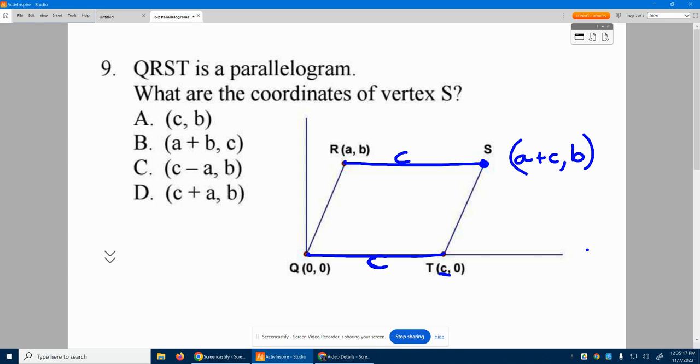It's a plus c comma b. Because again, the height is going to stay the same. We went to the right c units. So I took my a value and added c to figure out my new number right here. So which of these choices? Right here it is. A plus c, or c plus a, comma b. Choice D.